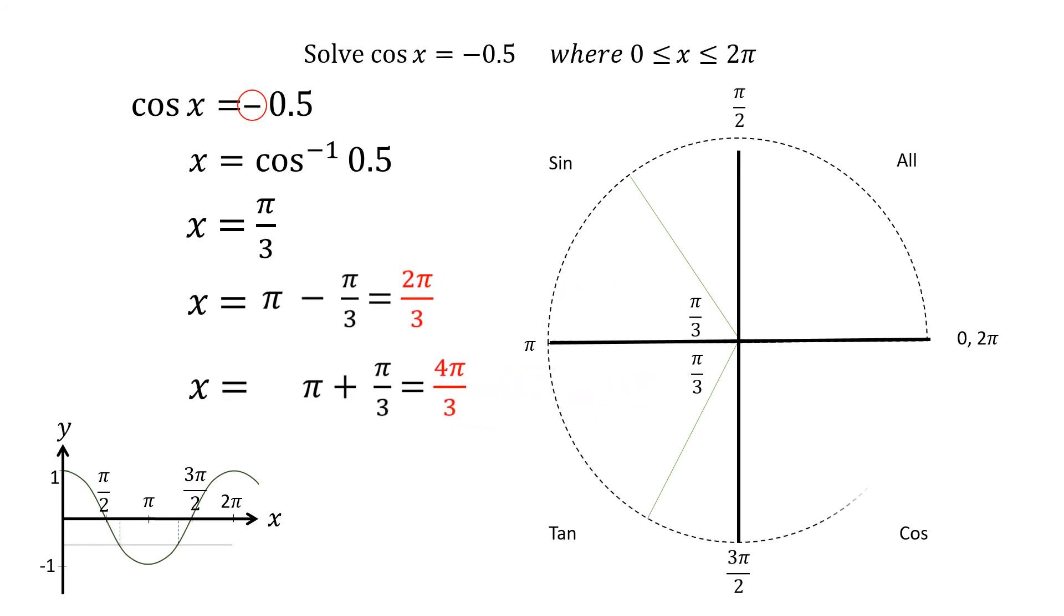Then the next solution is at pi plus pi over 3, getting 4 pi over 3.